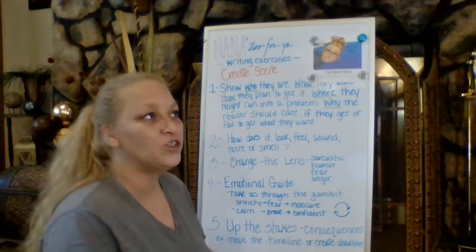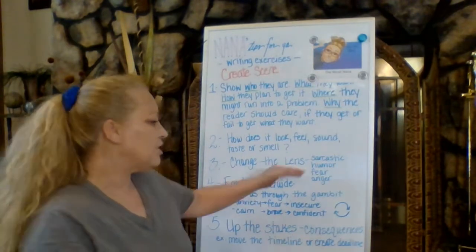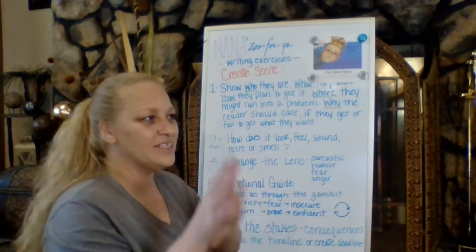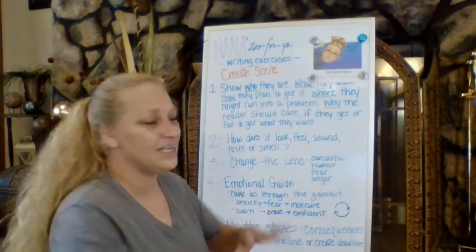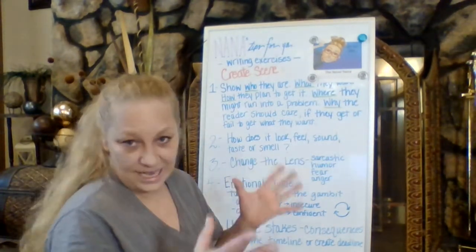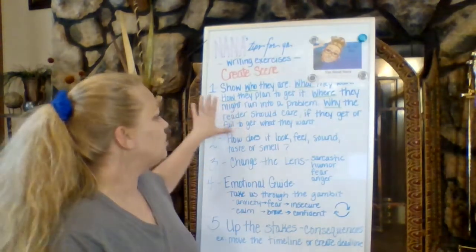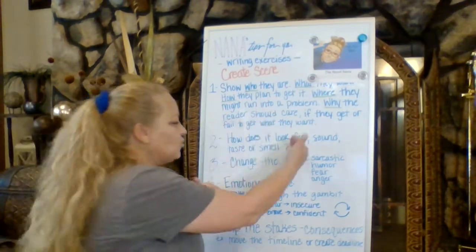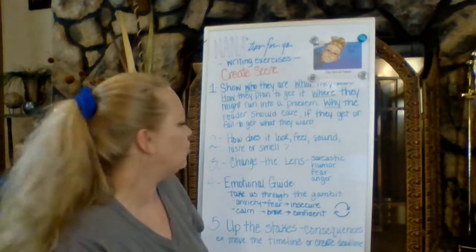Number three: change the lens in which the reader is seeing that scene play out. Maybe you could change it to a sarcastic lens — it's another layer of that scene you're building upon, because now we are seeing the scene through a sarcastic lens. These are just writing prompts and writing exercises. You can use the base scene to begin with and then try these other things to manipulate the original scene you created.